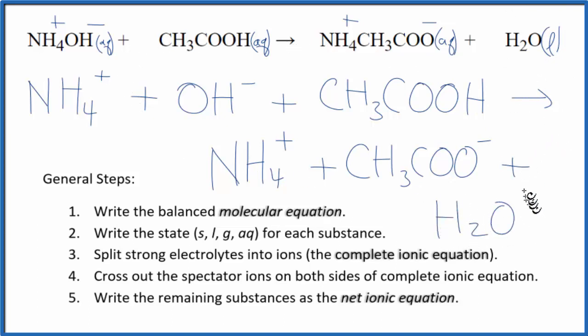So this is the complete ionic equation. Now we can cross out these spectator ions. They're the ions on both sides. So on both sides, I see in the reactants, we have this ammonium ion. We can cross that out, but everything else is unique. And that will be our net ionic equation. So I'll clean this up and write the states in. We'll have our net ionic equation for NH4OH plus CH3COOH.